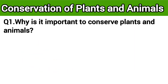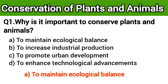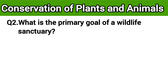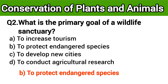Question number one: Why is it important to conserve plants and animals? The right answer is option A: to maintain ecological balance. Question number two: What is the primary goal of a wildlife sanctuary? The right answer is option B: to protect endangered species.